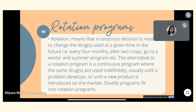A rotation program means making a conscious decision to change drugs at a given time in the future — typically every four months. The alternative is a continuous program where the same drugs are used indefinitely, usually until a problem develops or a new product is introduced. Shuttle programs feed into rotation programs.